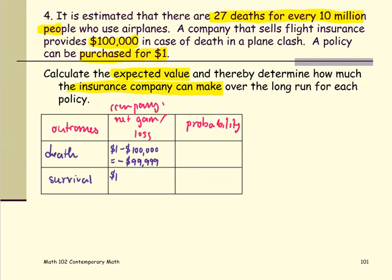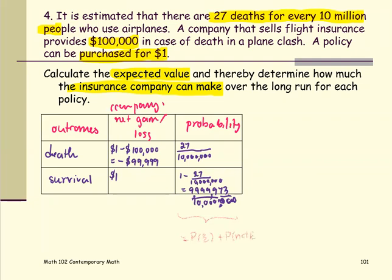Based on the information, 27 out of 10 million would be the probability of the death case. Then, not death or survival is going to be 1 minus 27 over 10 million, which is 9,999,973 divided by 10 million. We can check by adding these two probabilities to get the value 1, which confirms the probability of the event and its complement sum to 1.